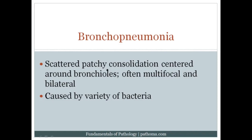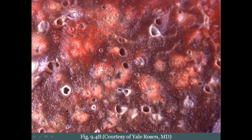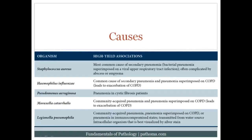Bronchopneumonia occurs when there are scattered patchy consolidations centered around bronchioles. It is often multifocal and bilateral, and again caused by bacteria. Classic X-ray shows multiple splotchy areas of pneumonia. On gross pathology, the patchiness of the process is evident, with scattered patches of inflammation running along the bronchioles.